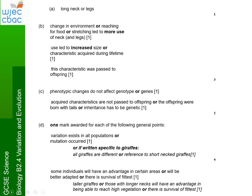For Part A: use the information in the picture to give one way in which a giraffe is adapted to its environment — either it has a long neck or long legs to help it reach the leaves higher up. For Part B, explaining how Lamarck accounted for evolution of the long neck — three marks. First, he would say there might have been a change in environment so that leaves were only on the top of trees; they would have to stretch their neck or legs to reach food. This would lead to an increased size or characteristic acquired during the lifetime — so if you've described that their neck got longer, that's your second point. Third, this characteristic would then be passed on to the offspring. Obviously we know this theory is wrong, but a description of it is fine.